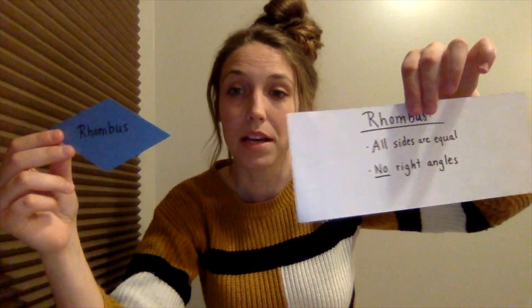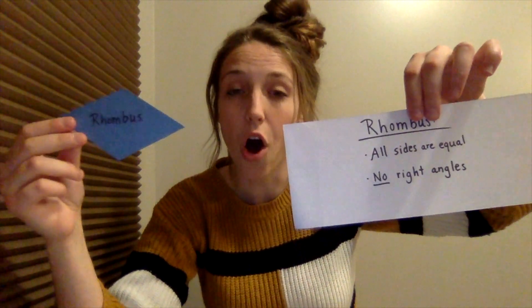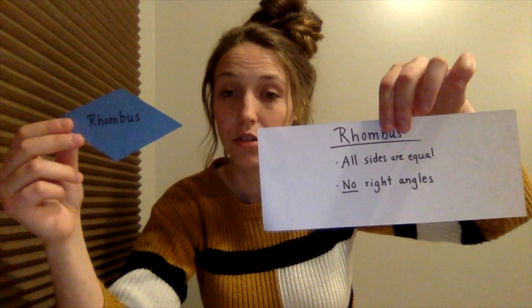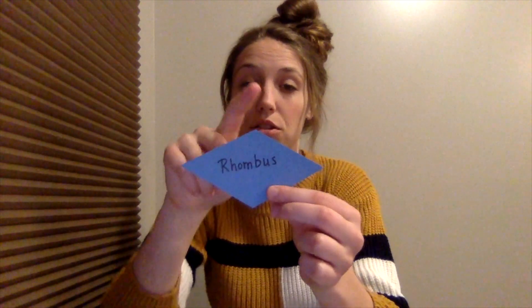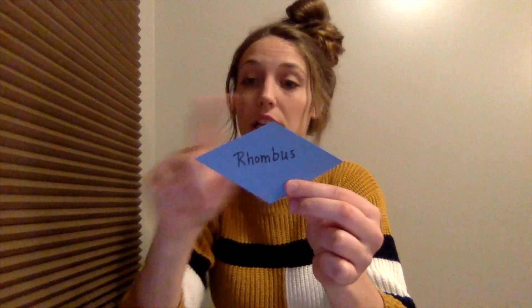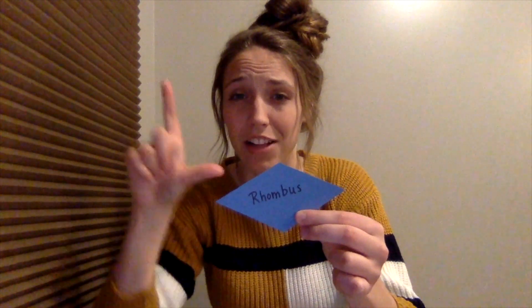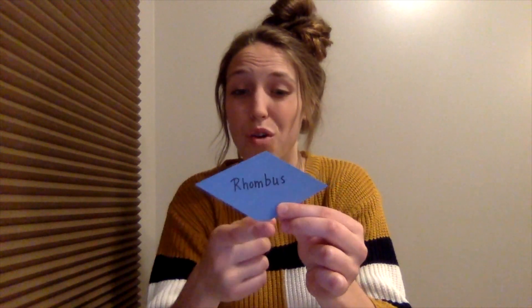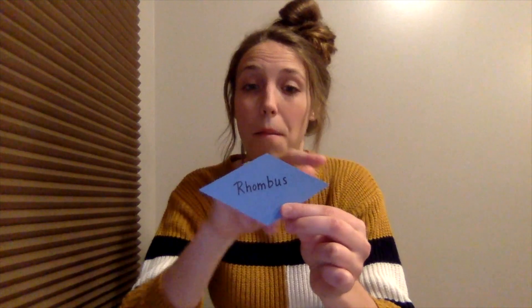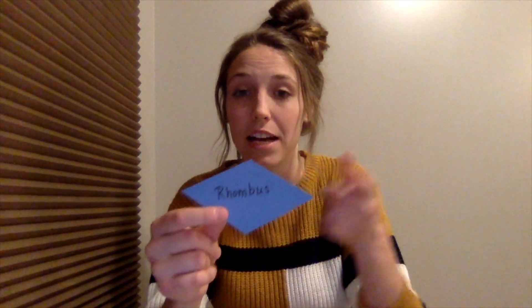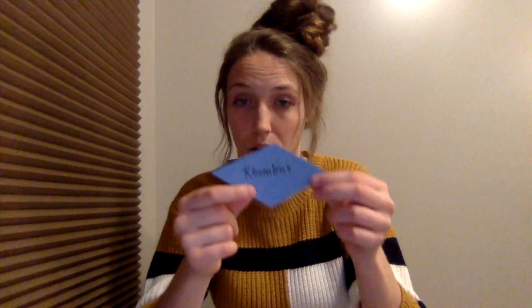Finally, we have our rhombus. All of its sides are equal, and it has no right angles. If you look at each of the angles, none of them make that perfect L shape, so there are no right angles. But like a square, all of its sides are equal.